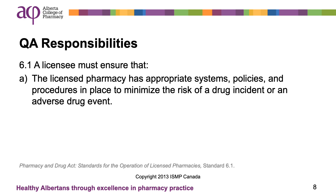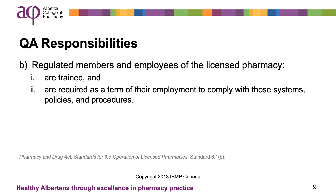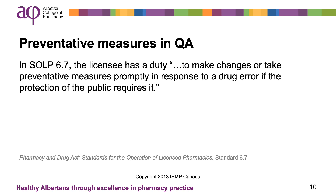Licensees are also responsible for overseeing the implementation of recommendations for system change as per SOLP 6.1. It states that a licensee must ensure that the licensed pharmacy has appropriate systems, policies, and procedures in place to minimize the risk of a drug incident or an adverse drug event, and that regulated members and employees of the licensed pharmacy are trained and are required as a term of their employment to comply with those systems, policies, and procedures. Preventative processes undertaken with the goal of preventing errors require a similar level of involvement by the licensee. Regardless of whether an incident has occurred, if the pharmacy team identifies a potential risk, the licensee will take preventative actions as appropriate to prevent incidents.